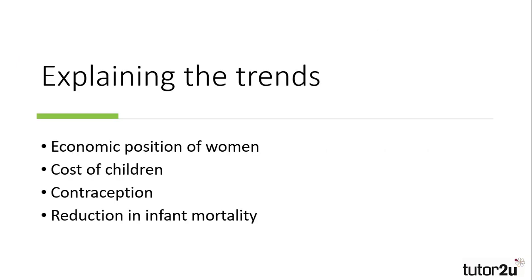How can we explain these trends? We are going to look at four explanations for these changes: firstly, the changing economic position of women; then the cost of children; the availability of contraception; and the reduction in the infant mortality rate. Each of these reasons can be linked to other changes that we have discussed, so it is worth adding to those reasons to really develop your understanding of demographic trends.